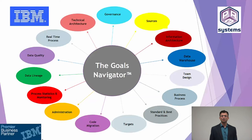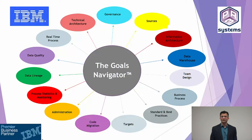In the Goals Navigator process, we look at these 15 areas. Starting from governance — there are specific questions related to governance to understand where you are and where you want to be, what are the gaps, strengths, and weaknesses. We look at your sources, your information architecture, your existing data warehouse, your team design, and your business processes — both batch and real-time. We look at standards and best practices you're using and see what opportunities you have to improve them further. We look at your targets, your code migration process — how you go from development to system test to production — and your administration strategy, including who is administrating your ETL and BI infrastructure.